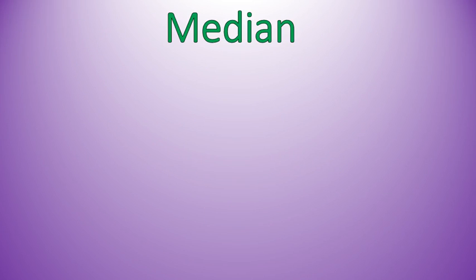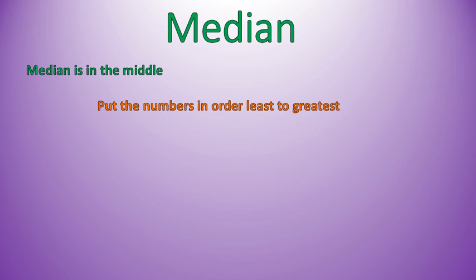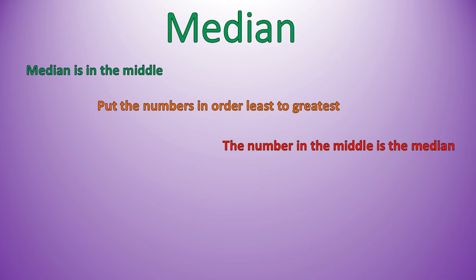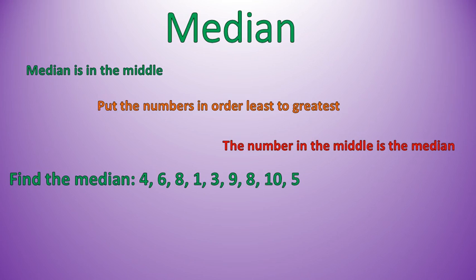Moving along, we're now going to talk about median. Median is in the middle — like the median of a highway is that barrier in the middle. So the first step is to put all the numbers in order from least to greatest. That's a very important step, because otherwise you're just picking a random number. Put the numbers in order from least to greatest, and the number in the very middle is the median.